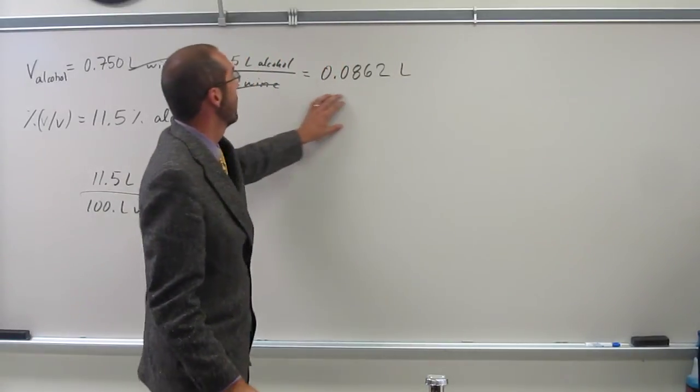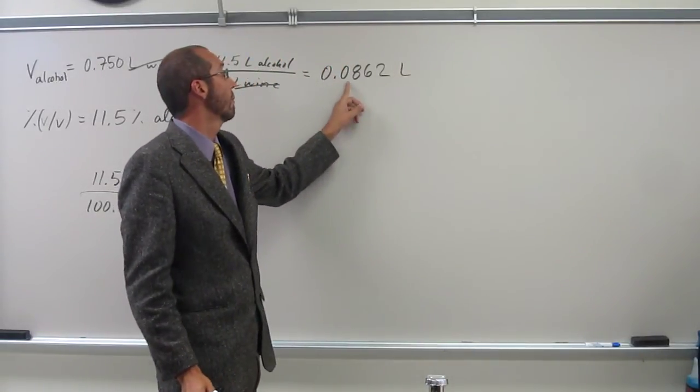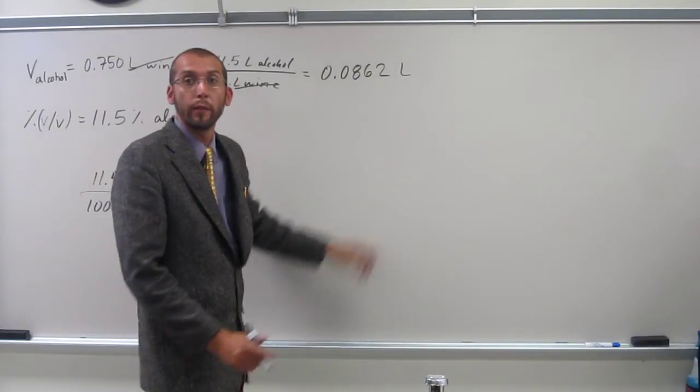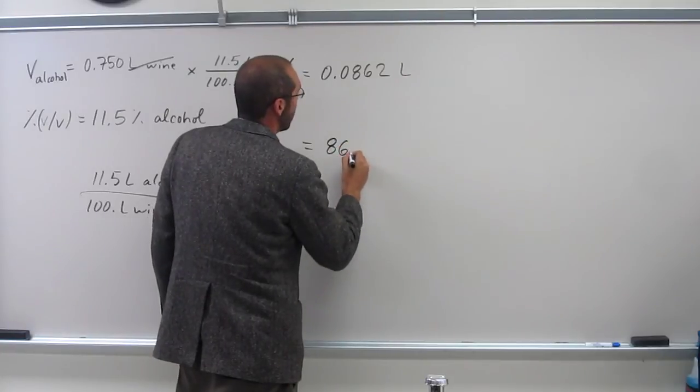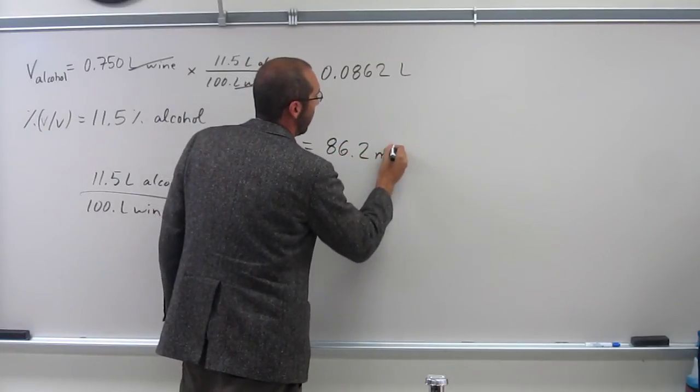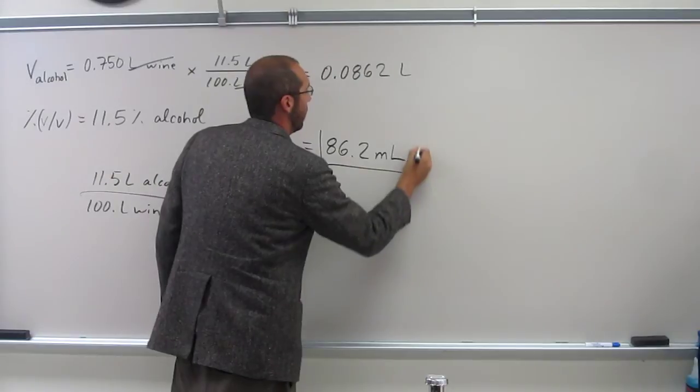So, to get milliliters out of that, just one, two, three, right? So, when we look at this, it's going to be 86.2 milliliters of alcohol.